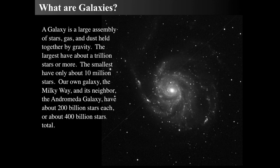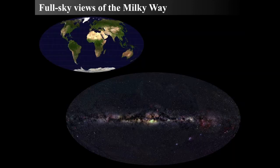So what are galaxies? Galaxies are huge assemblies of stars, gas, and dust held together by gravity. The largest have about a trillion stars and the smallest have only tens of millions. The nearest neighbor to the Milky Way is the Andromeda Galaxy, or Messier Object 31. Both our galaxies have about 200 billion stars each, for about 400 billion stars between the two galaxies that make up the local group. This is the Pinwheel Galaxy, M101, imaged by the Palomar Digital Sky Survey.